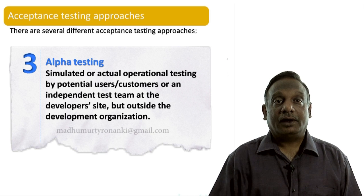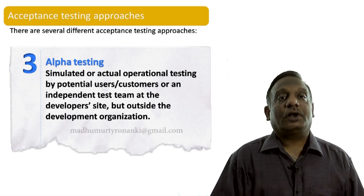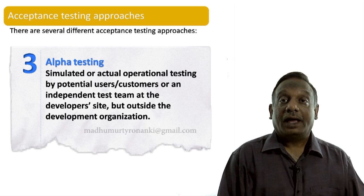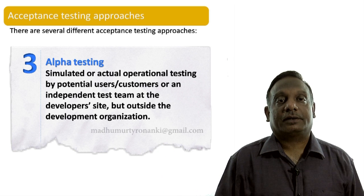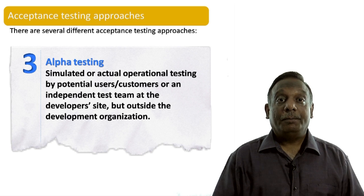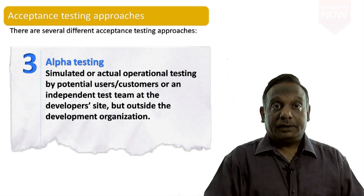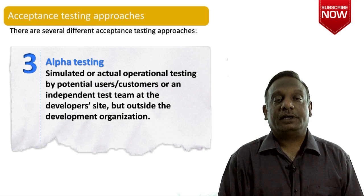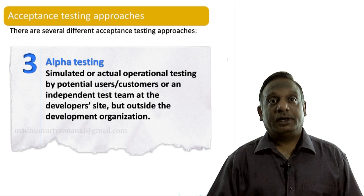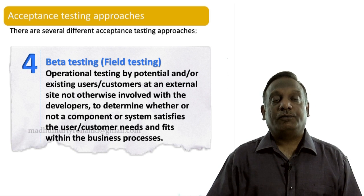Alpha testing is simulated or actual operational testing by potential users, customers, or an independent test team at the developer's site. For example, before releasing a product to the market, you invite potential users and customers to do testing at your site. They are independent people outside the development organization; they test it, give feedback, and based on that feedback you can rework and then release the software.